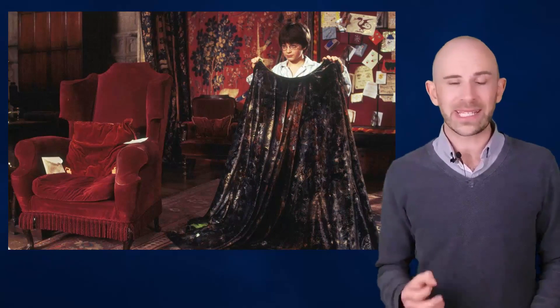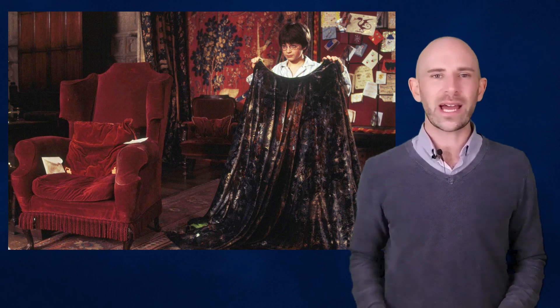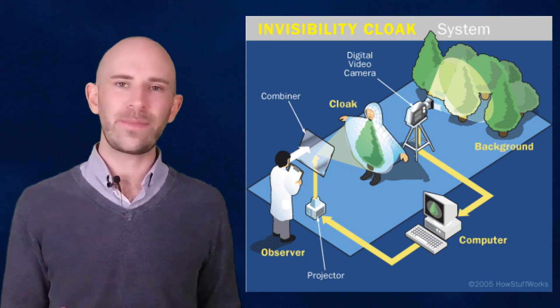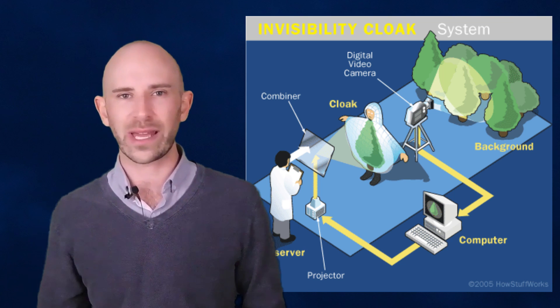Number 1: Invisibility Cloak. Masking the appearance of someone with an invisibility cloak is one thing, but scientists have now figured out a way to mask time as well. How does this happen?